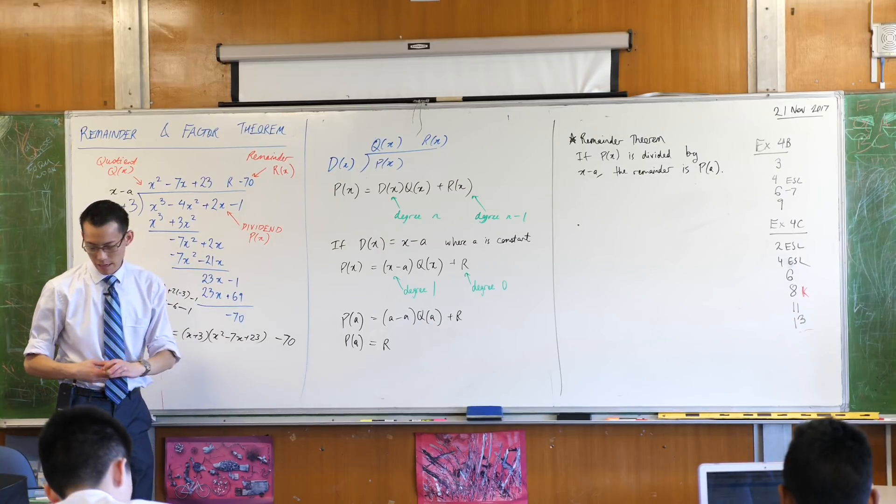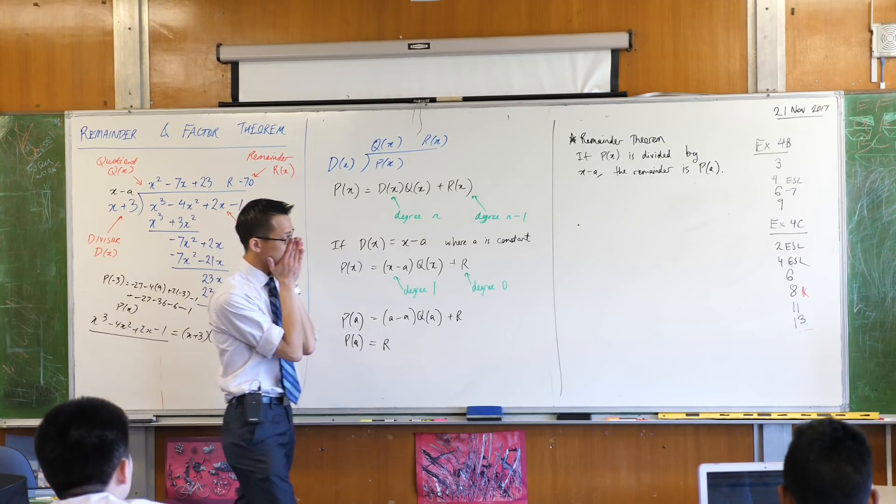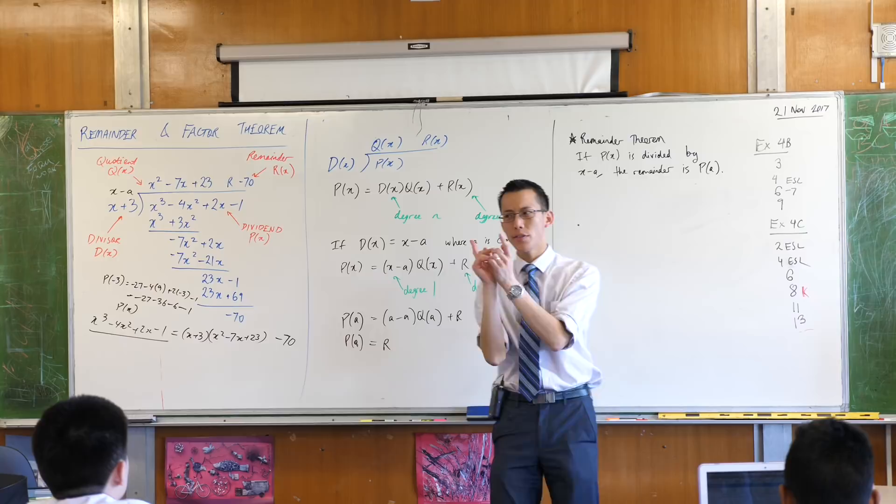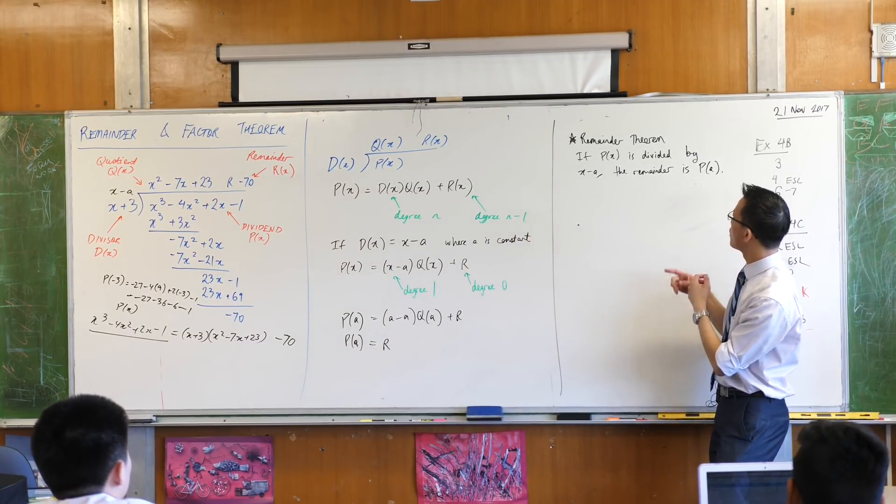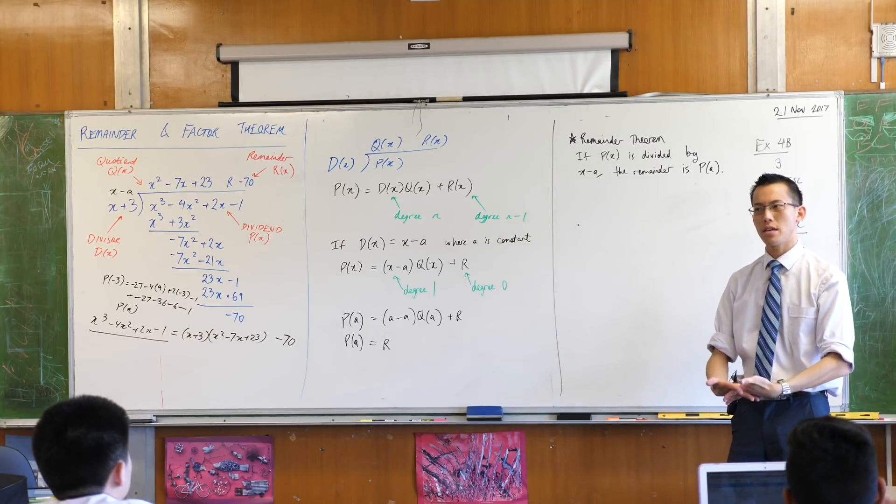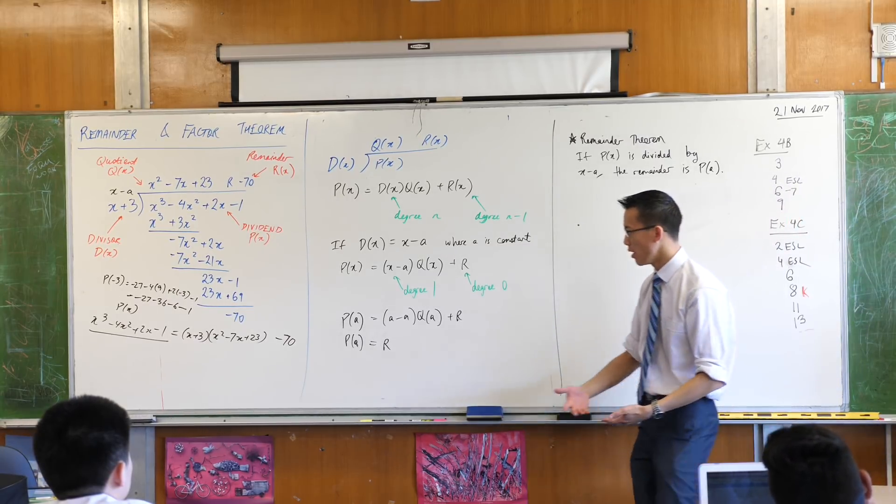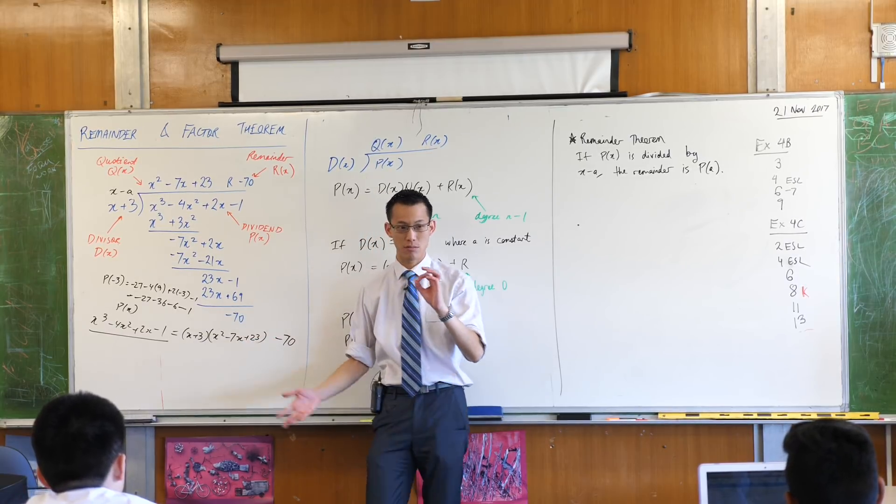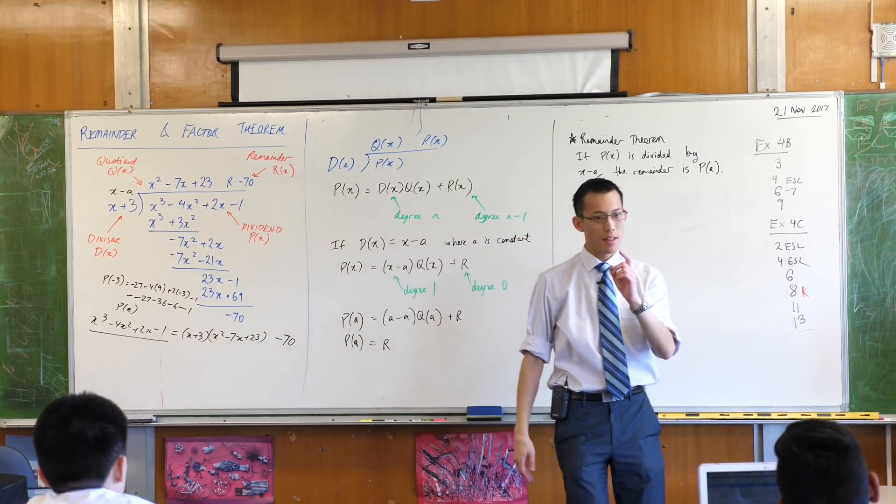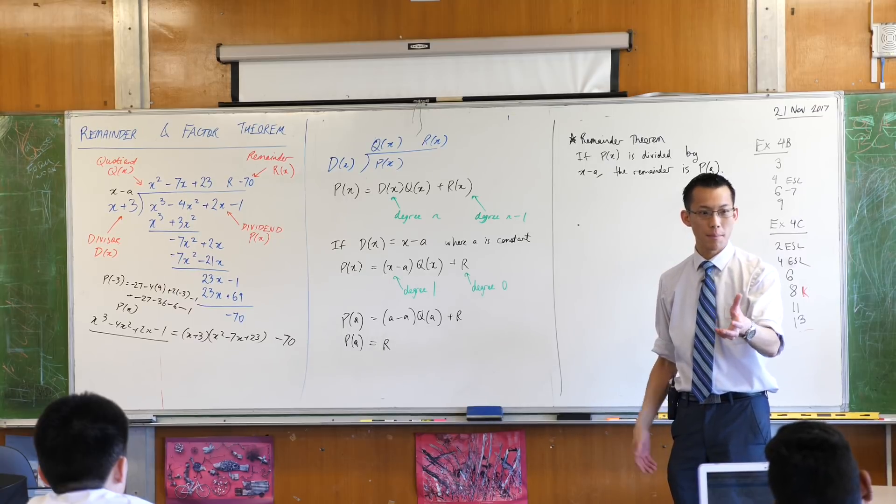Now my question to you is, don't write anything down, just have a think about this with me. What if you put in a number and your remainder happened to be zero? What does it mean when you divide through something and you get all the way to the end and your remainder is exactly zero?